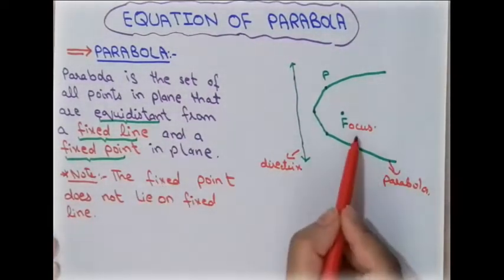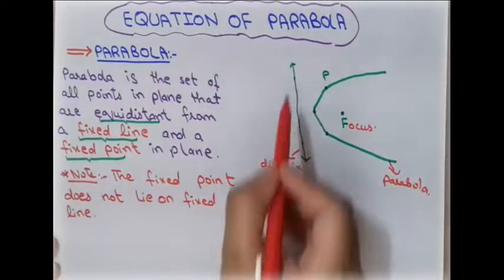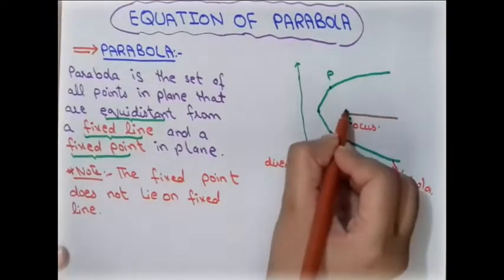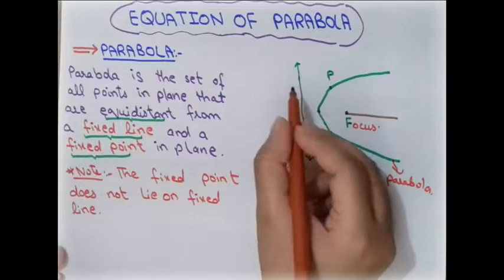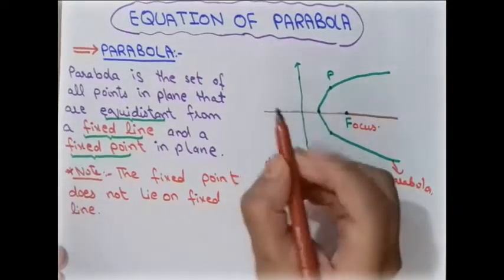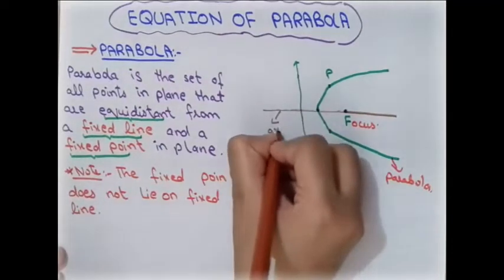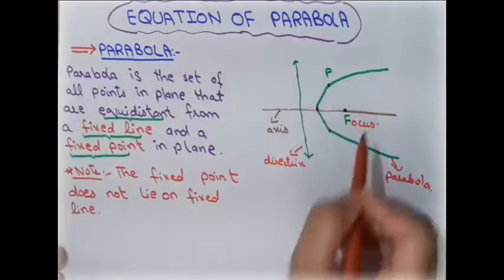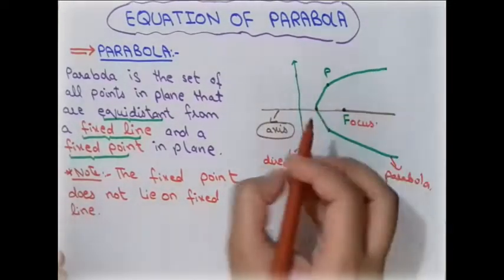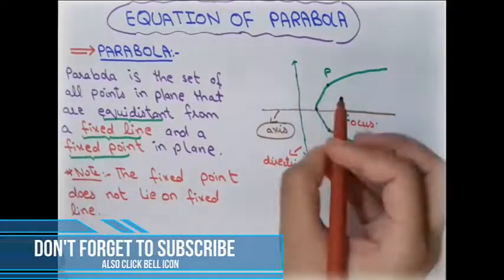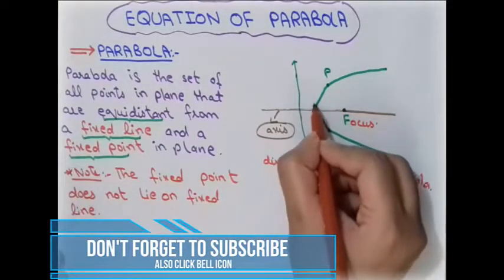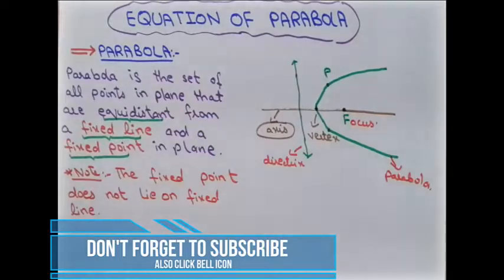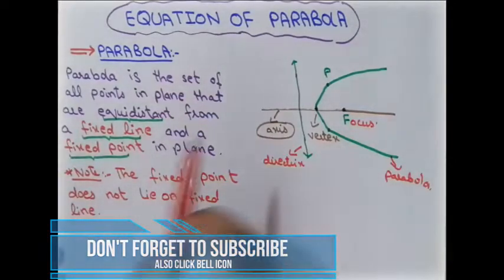An important note: the focus does not lie on the directrix. The straight line passing through the focus and perpendicular to the directrix is called the axis of the parabola. The parabola is symmetric to this axis, and where the parabola meets the axis is called the vertex.